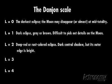When L equals two, the moon appears deep red or the color of rust. The center of Earth's umbra is dark, but its outer edge appears bright.